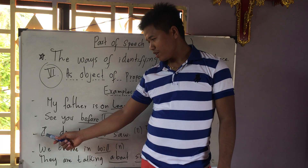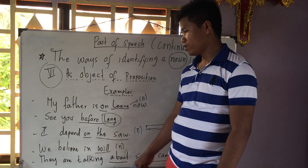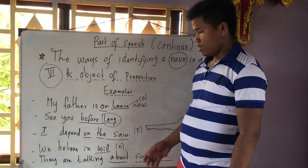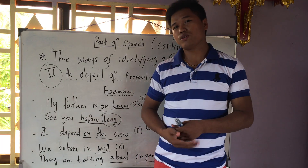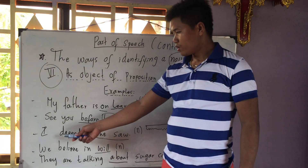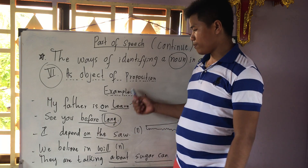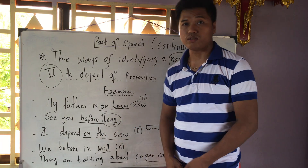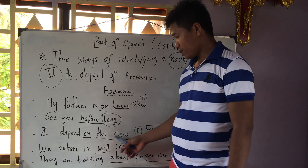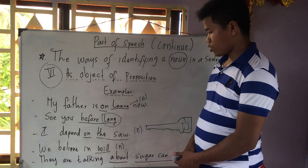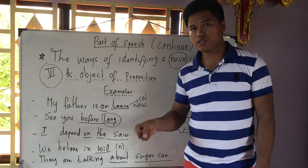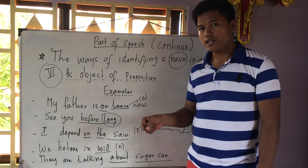Number three: 'I depend on the stores.' When you look at this, 'on' is the preposition and 'stores' is the noun. It comes after 'depend on'. Stores means something that you use for restoring or keeping something as a supply.